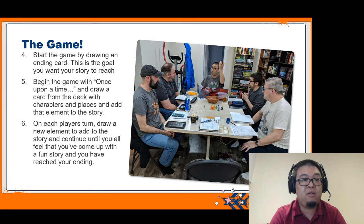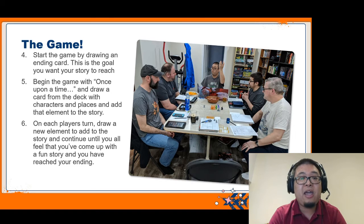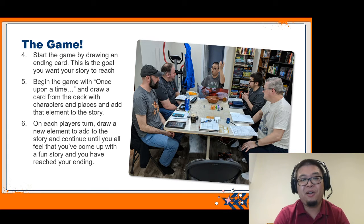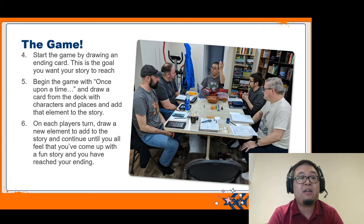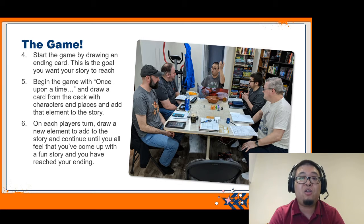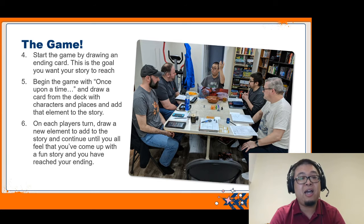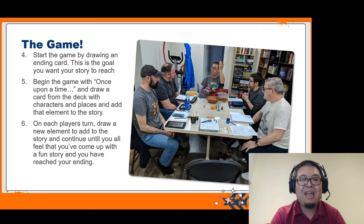You start the game by drawing an ending card — this is the story goal, and this is where you want to reach. Once we all know what the ending is going to be, you start by saying 'once upon a time,' then you draw a card from the deck that has characters and settings and add those elements to the story. After you've introduced that element, you pass it to the next player who continues the story, drawing another card and adding that element as well. You keep going until you've come up with a really fun story and feel that you've reached a good point to finally get to the ending that you drew.